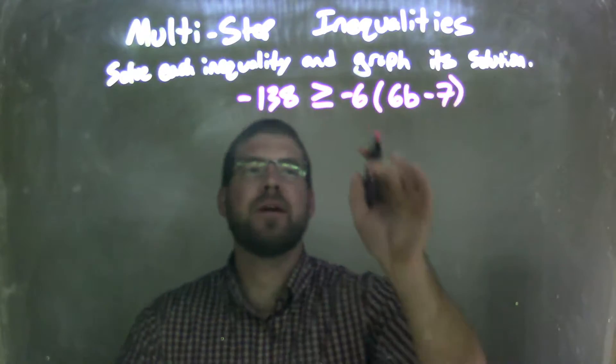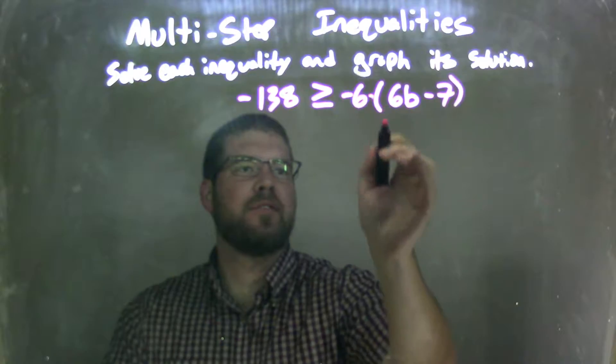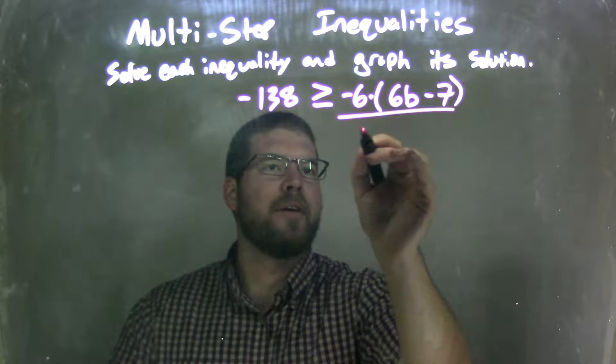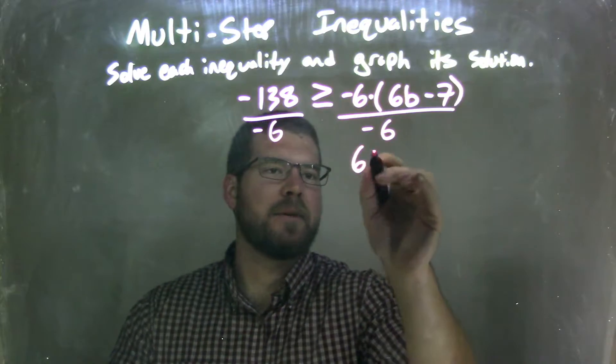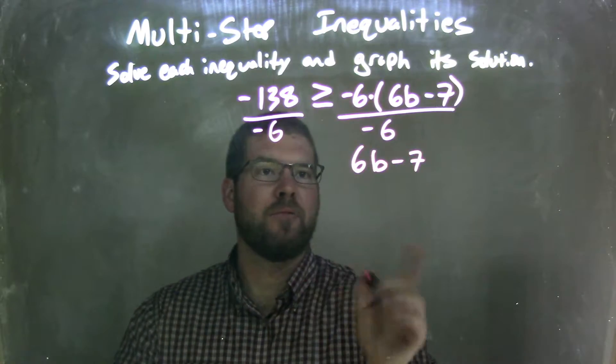Well, my first step is I want to divide by negative 6 to both sides. There's multiplication going on right there. I'm going to divide by negative 6 to both sides. What that's going to do is leave me with 6b minus 7 on the right,